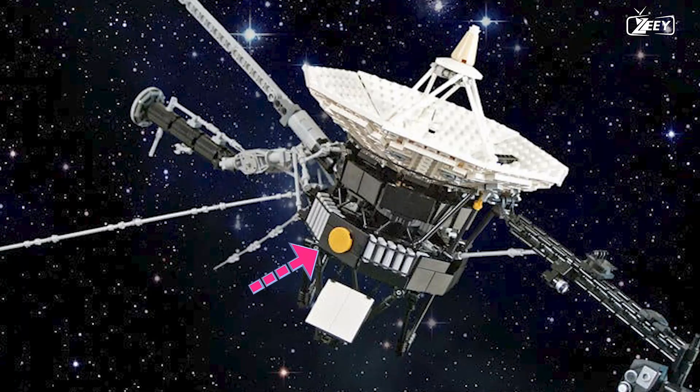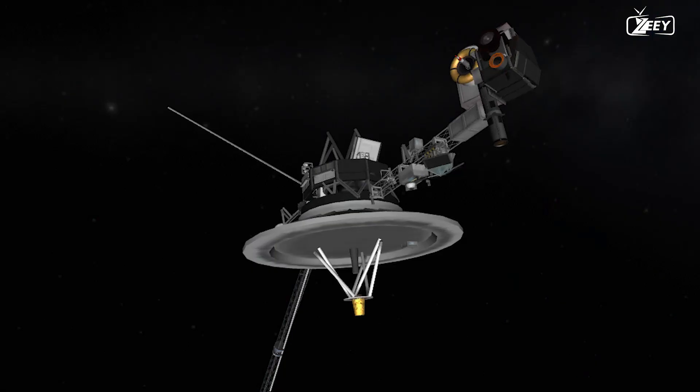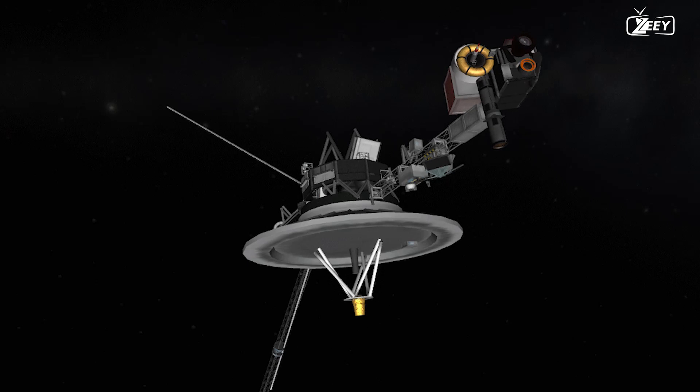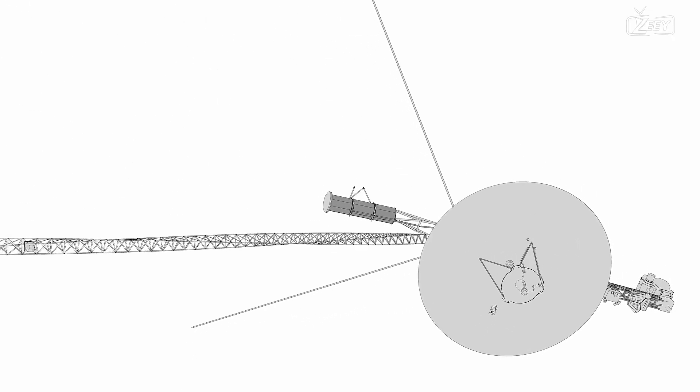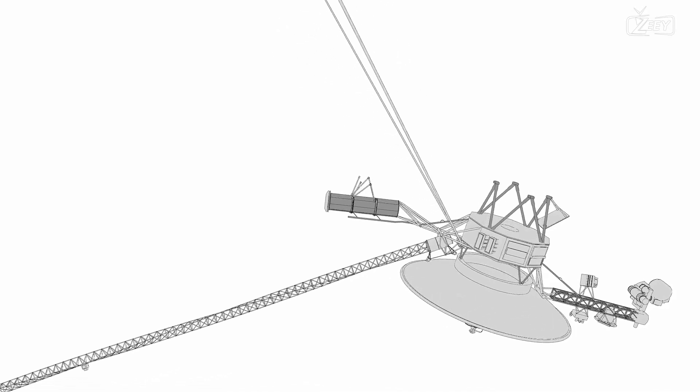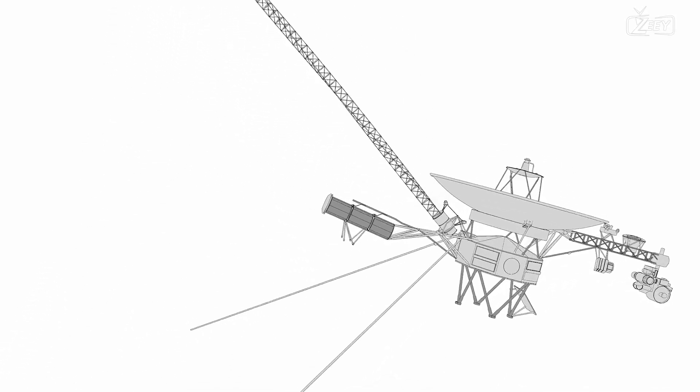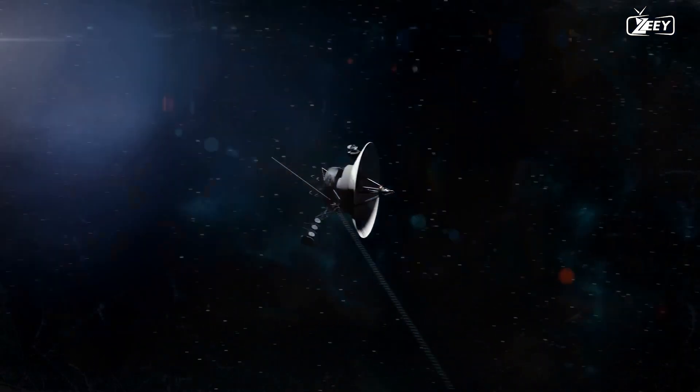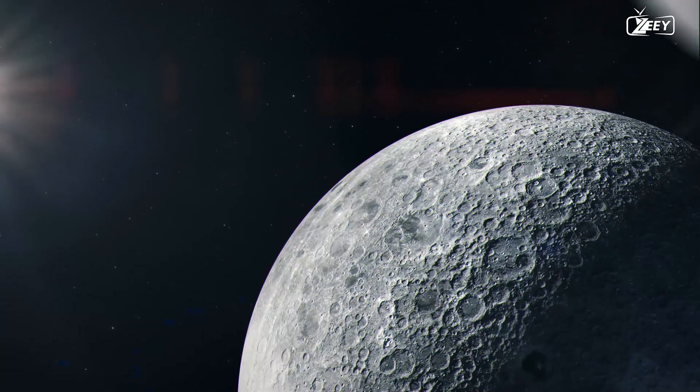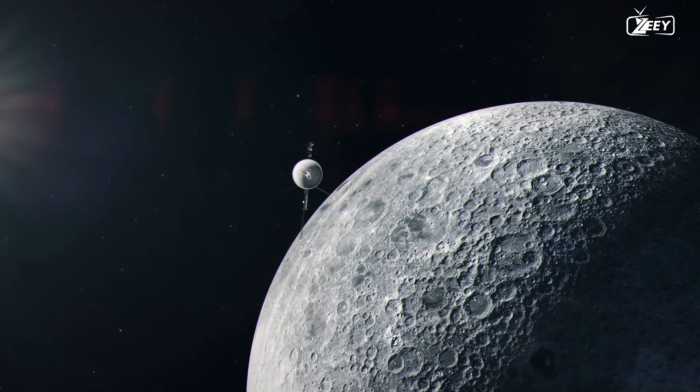The golden record served as a chronicle of everything that makes our planet special, including whale calls, music, and greetings in approximately 52 languages. Even more importantly, the golden records contained the location of our sun, letting the galaxy know where we are. Voyager 1 was also equipped with 10 scientific instruments, including a two-camera imaging system, multiple spectrometers, a magnetometer, and detectors for low-energy charged particles and high-energy cosmic rays.